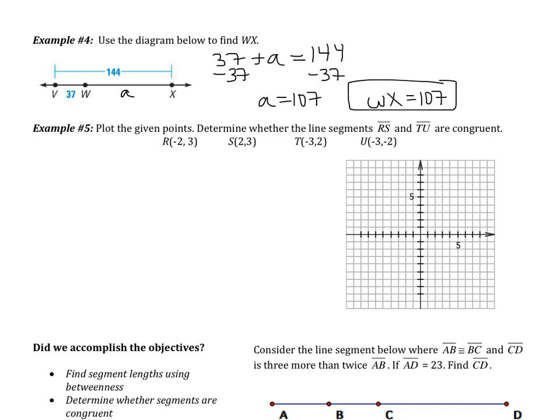We have one last example to do together, and then you're going to do one on your own. Example five, it says plot the given points. Determine whether the line segments RS and TU are congruent. So right now, I want you to take a minute and plot those points, and I'm going to do the same.